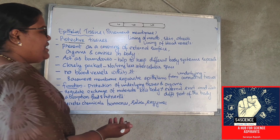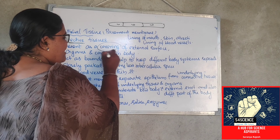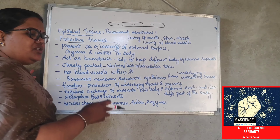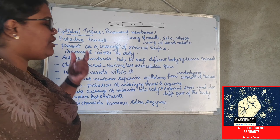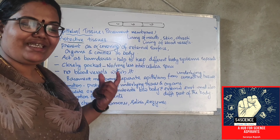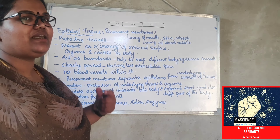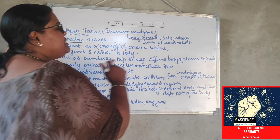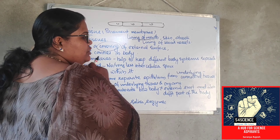Where can you find this epithelial tissue? It is acting as a covering on external surfaces, like in our skin. There is a covering outside organs. Wherever cavities are, there is a covering. You can see it in the lining of the mouth — inside the mouth, the buccal cavity covering is there. The lining is actually made by the epithelial tissue.